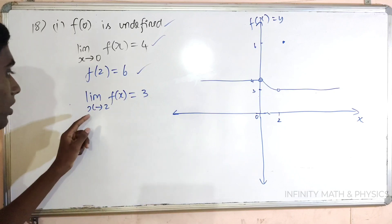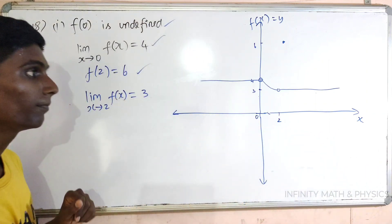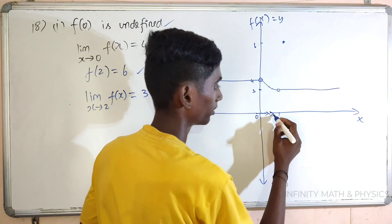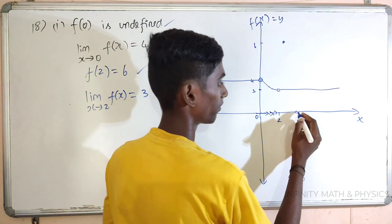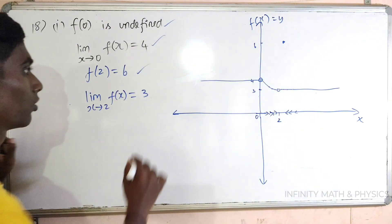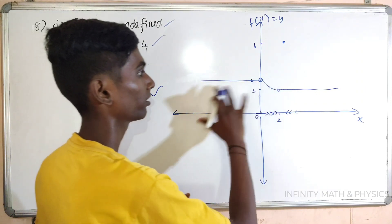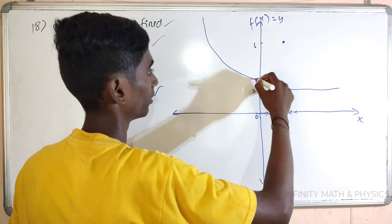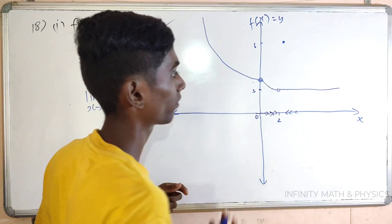Next condition: limit when x tends to 2, f of x is equal to 3. So x approaches from the left side and right side. When I approach the left side, the function is here. Left side approach to 2, right side approach — you come here. So this is our function.